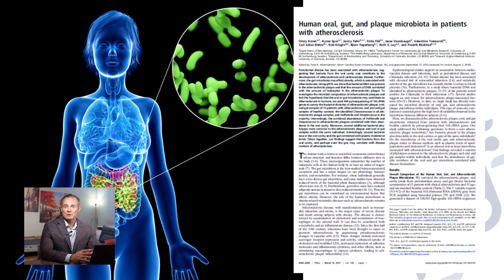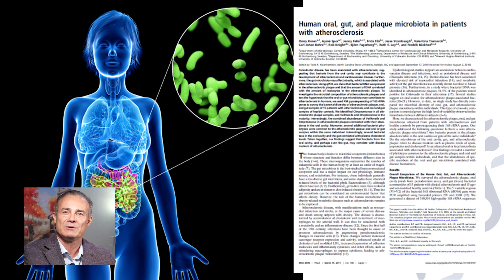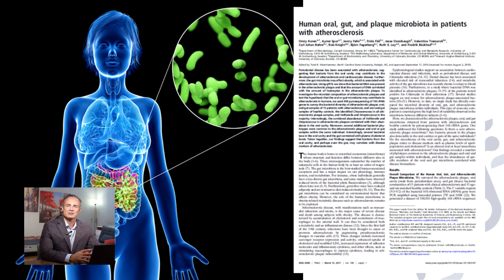Dysbiosis can occur in the mouth as well. There are certain species associated with dental cavities and periodontitis. The bacteria in the mouth have been linked to atherosclerotic disease, and dental disease has been associated with elevated risks of heart attacks. In one paper, the bacterial DNA found in atherosclerotic plaque strongly correlated with local immune activation, implying increased inflammation in the arterial plaque.